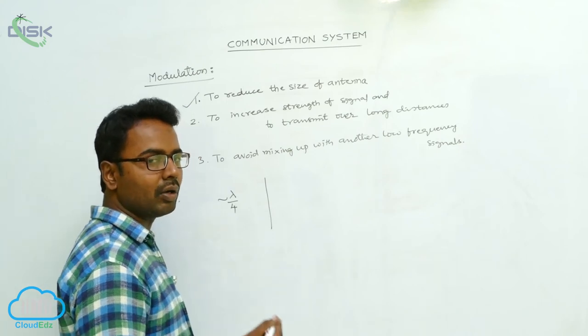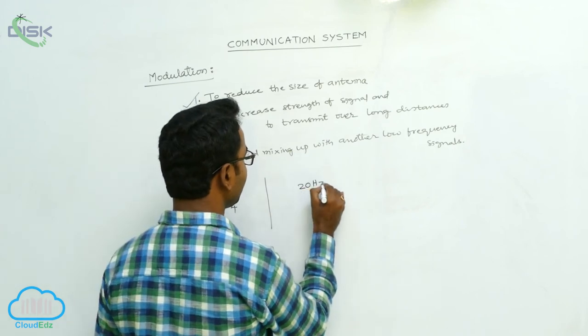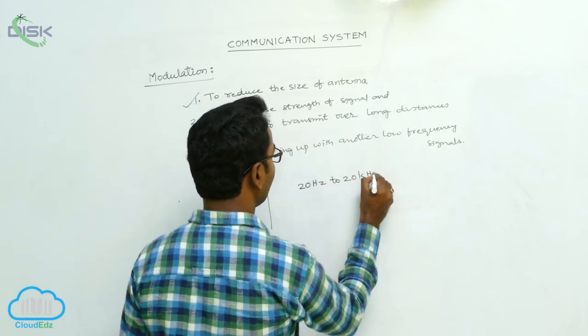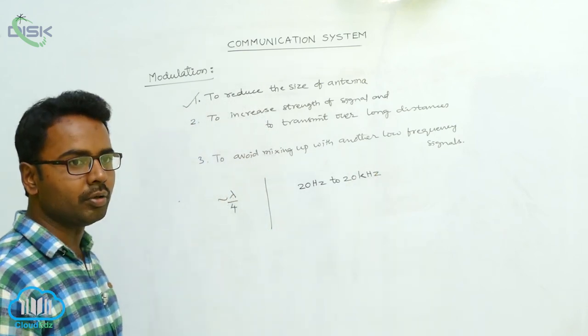For example, consider voice signals. For voice signals, the audible range is from 20 hertz to 20 kilohertz. This is the frequency range of audible signals.